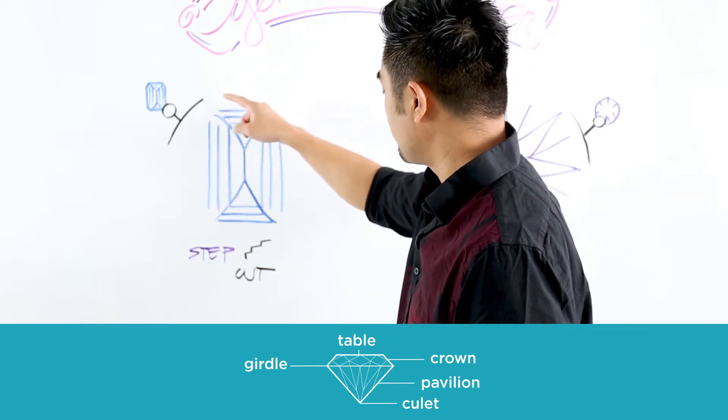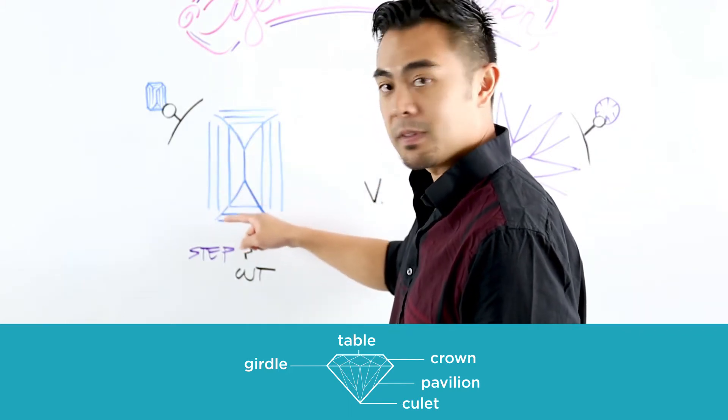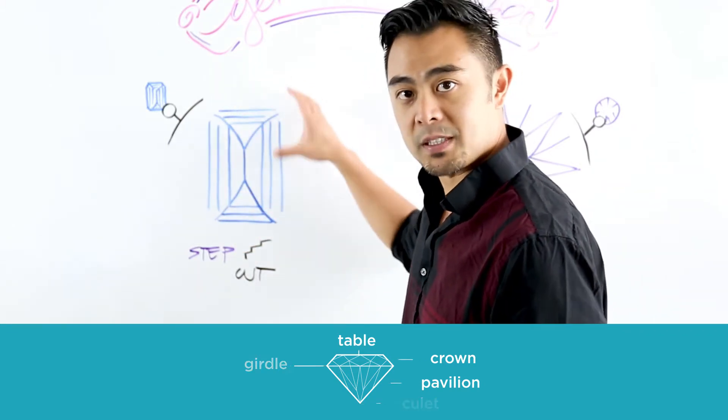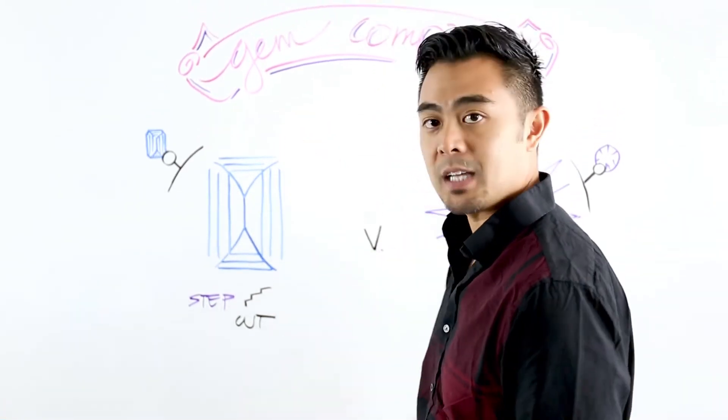And if the girdle is vertical then the facets will also be vertical so it definitely looks like a stairway. And that's why it's called the step cut.